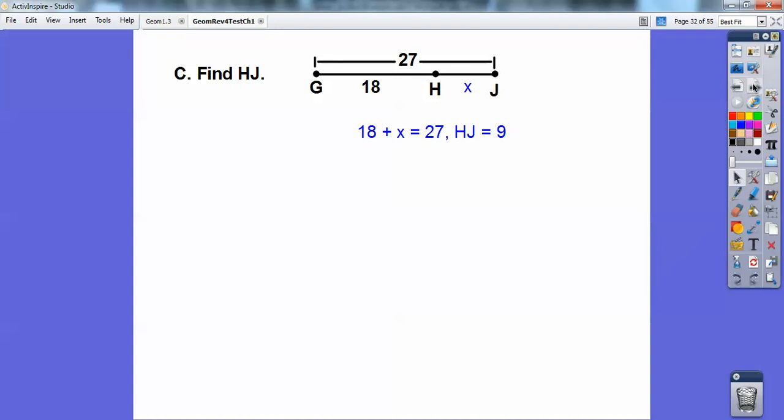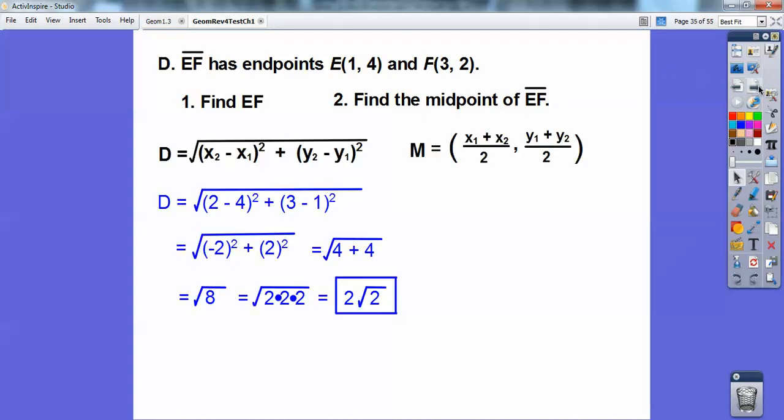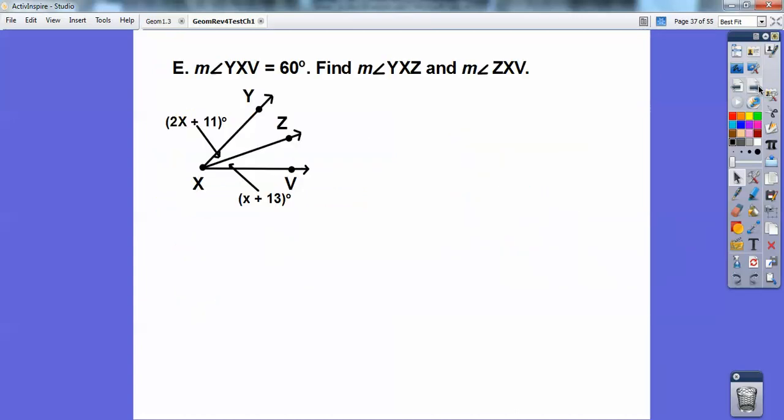Find HJ. I'm going to let it be X, and then so we should get 9 on that. So EF has endpoints 1, 4 and 3, 2. Find the length of EF and find the midpoint. This is just like our board problem. You're going to use your distance formula and your midpoint formula. There's the distance, 2 root 2. And then the midpoint should get you 2, 3.